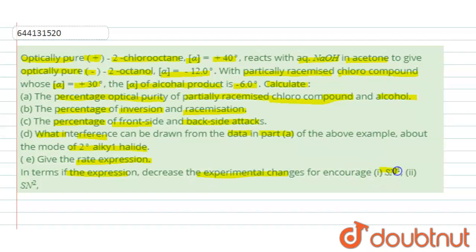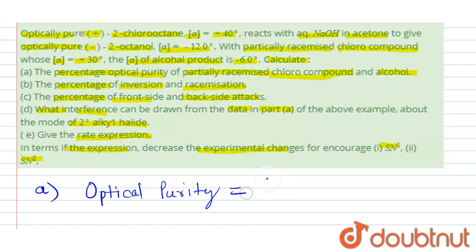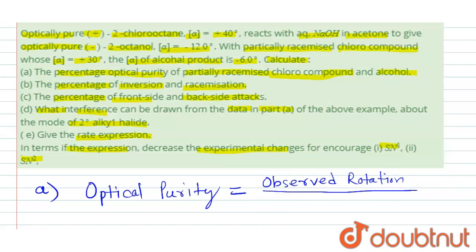Let's solve the first part — percentage optical purity. We know optical purity is equal to observed rotation divided by rotation in the pure enantiomer.